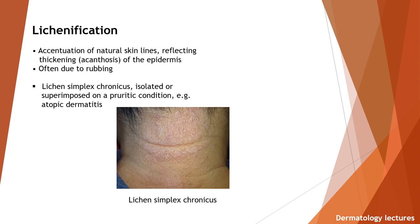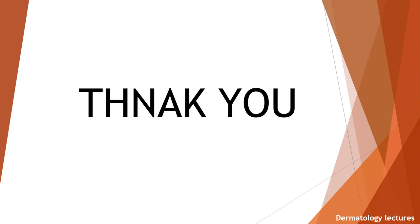Lichenification is accentuation of natural skin lines reflecting thickening — that is, acanthosis of the epidermis — often due to rubbing. Examples are lichen simplex chronicus, isolated or superimposed on a pruritic condition, for example atopic dermatitis. Here you can see the example of lichen simplex chronicus. And this is all for today. Thank you everyone.